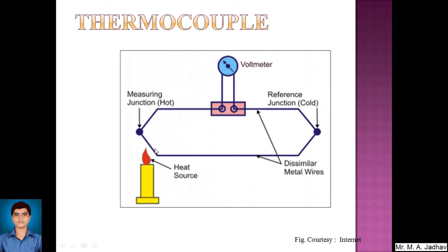The measuring junction is kept at the source where we need to measure the temperature — it is touched to the surface whose temperature we want to measure. The thermocouple works on the basic principle of the Seebeck effect: when there is a change in temperature at a junction of two dissimilar metals, a potential difference is created between the two junctions. That potential difference, measured by the voltmeter, is proportional to the change in temperature.